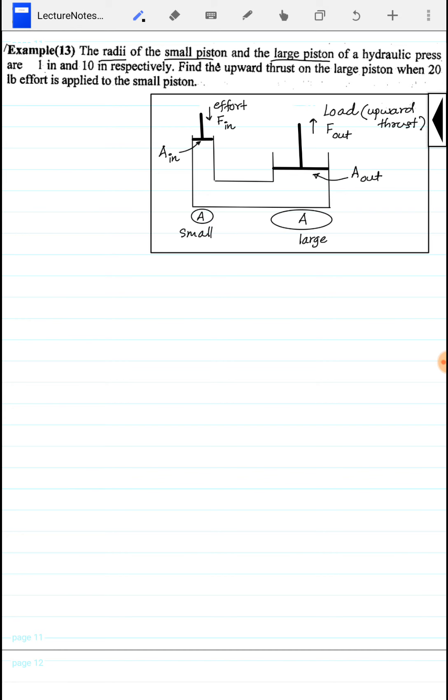For a hydraulic press, the radius of the small piston is 1 inch and the radius of the large piston is 10 inches respectively.